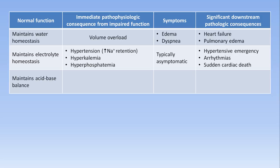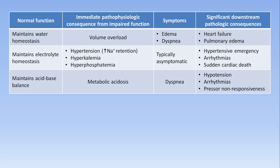The kidneys maintain acid-base balance by regenerating bicarbonate in the proximal tubule and excreting hydrogen ions in the distal tubule. When this function is disrupted, the consequence is metabolic acidosis. Mild metabolic acidosis is asymptomatic, but as it worsens, patients may develop dyspnea as respiratory drive increases due to falling pH. When metabolic acidosis becomes severe — causing pH to drop to less than about 7.20 — problems develop due to impaired protein function, including hypotension, arrhythmias, and lack of responsiveness to exogenous pressors.